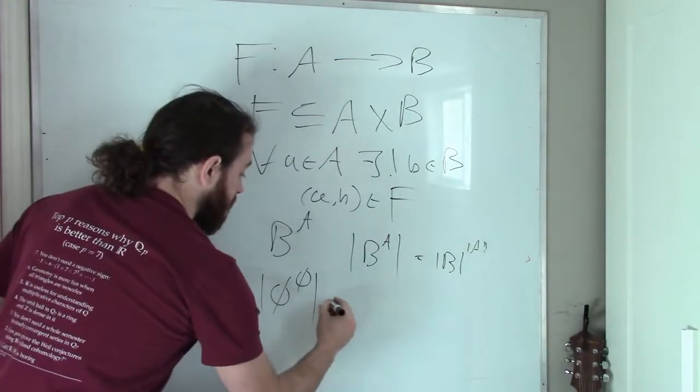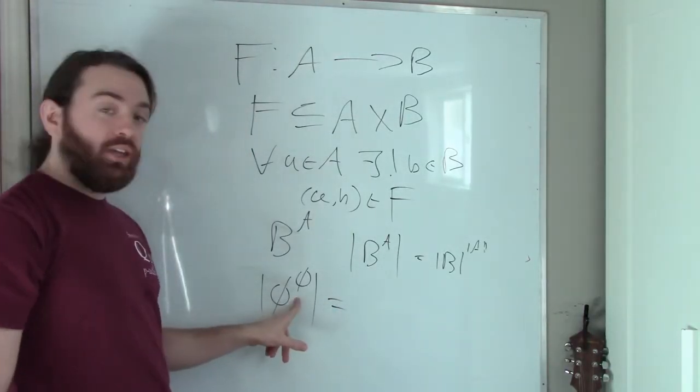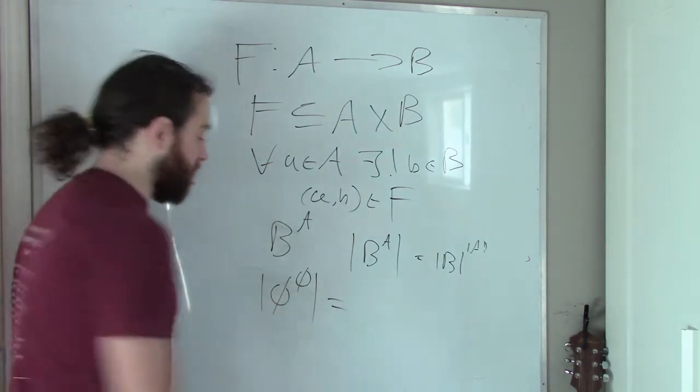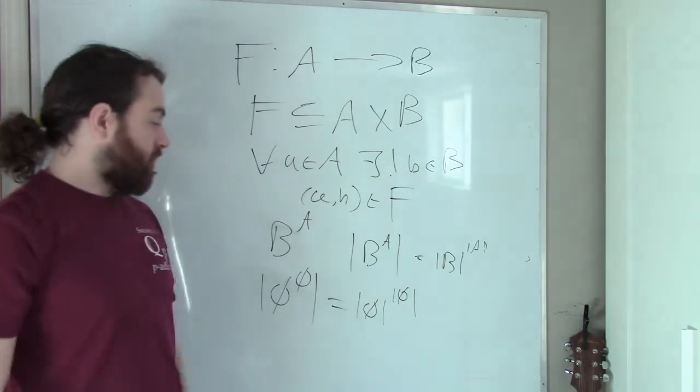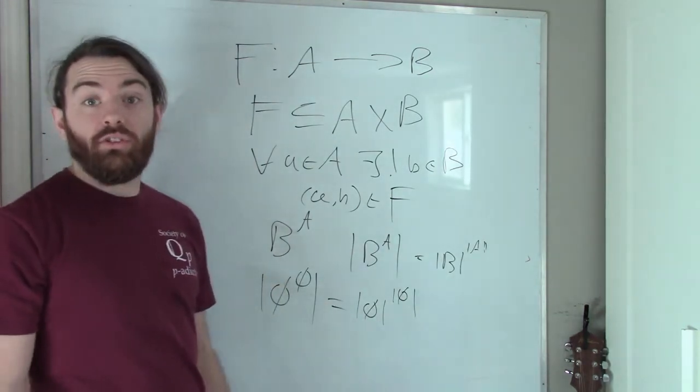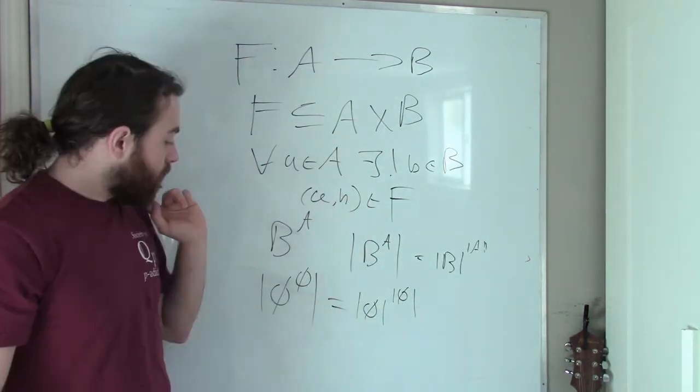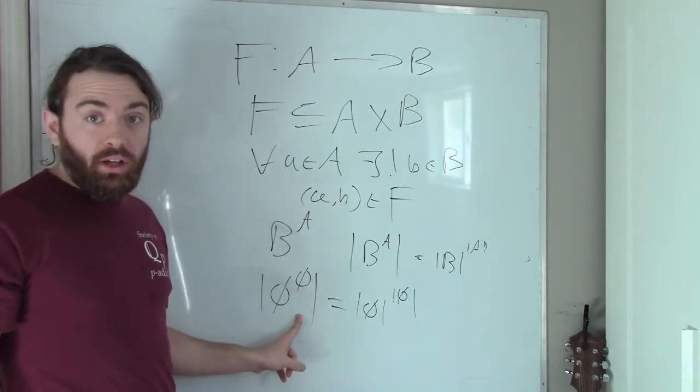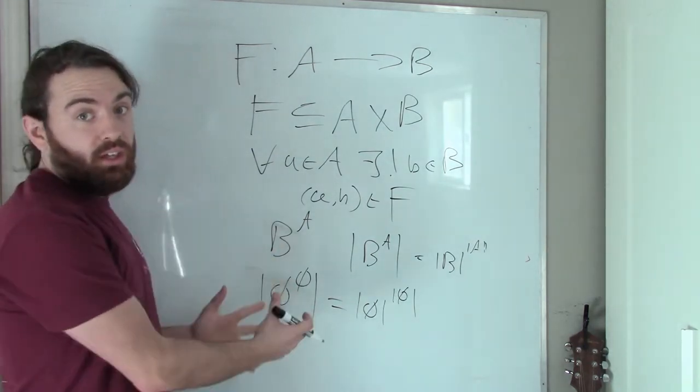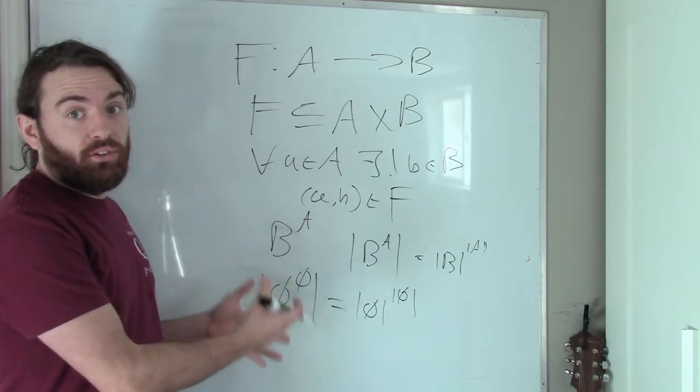And so, the cardinality of the functions from the empty set to the empty set is the cardinality of the empty set to the cardinality of the empty set. In other words, 0 to the power of 0. And so we can determine this value by determining what the cardinality of the set of functions from the empty set to the empty set is.